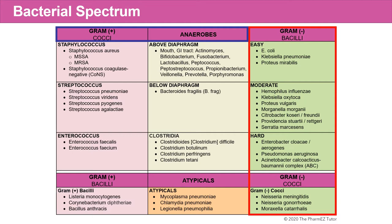In the easy-to-hit gram-negative group, we have E. coli, Klebsiella pneumoniae, and Proteus mirabilis. The moderate gram-negative bacilli group consists of Haemophilus influenzae, Klebsiella oxytoca, Proteus vulgaris, Morganella morganii, Citrobacter coseri and ferrandi, Providencia stuartii and retgarii, and Serratia marcescens.